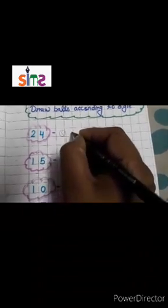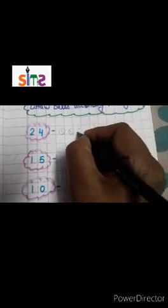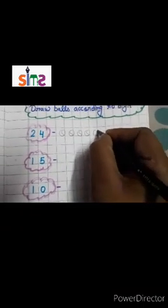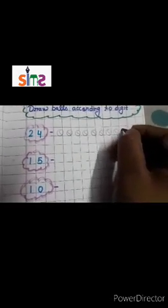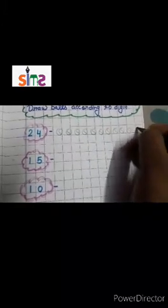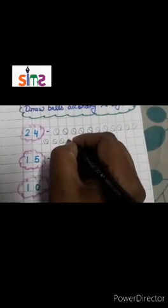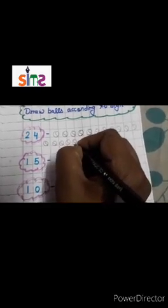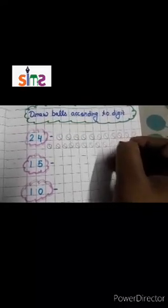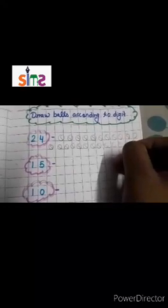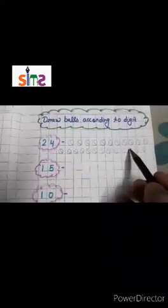Let's start. 1, 2, 3, 4, 5, 6, 7, 8, 9, 10, 11, 12, 13, 14, 15, 16, 17, 18, 19, 20, 21, 22, 23, 24. Which number is this? 24. So how many balls did we draw? 24.